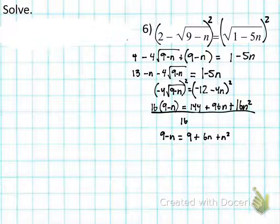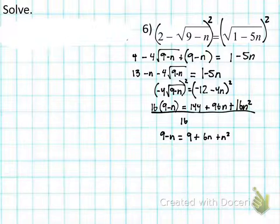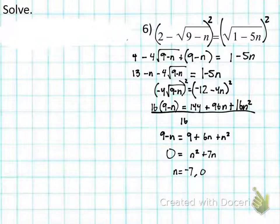Combining like terms, the trinomial simplifies and we get n = −7 and n = 0. Now the last step: we have to check for extraneous solutions. Plugging in n = −7: √(9 − (−7)) = √16 = 4; 2 − 4 = −2. But can the square root of anything equal −2? No — so n = −7 is an extraneous solution.